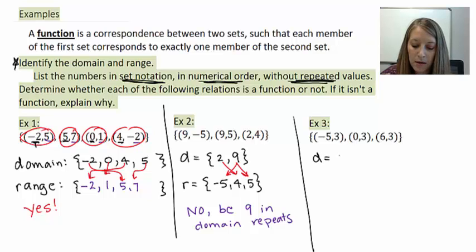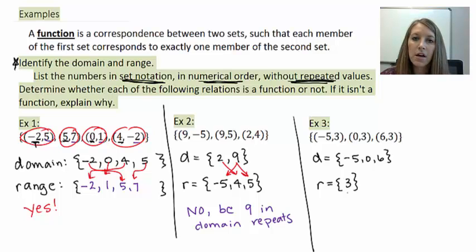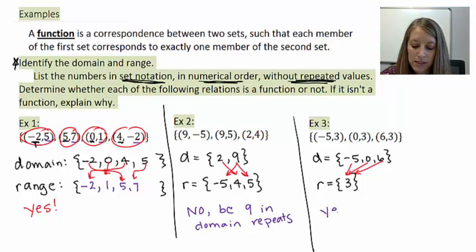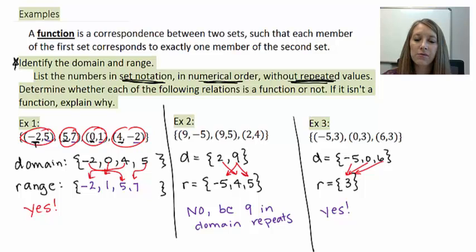Example three: the domain — all X values in numerical order in set notation — is: negative 5, 0, 6. For the range, I see the same Y value all the way across, so in set notation the only number in my range is 3. Each domain value goes to 3. Remember, you can have repeated range values but not domain values. There are no repeated domain values here, so this is yes, it is a function. In the next video, we'll figure out how to determine whether something is a function not by using sets, but by using a graph.